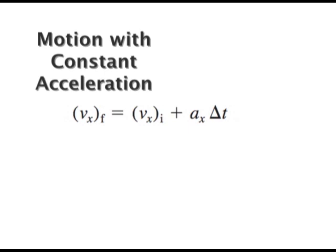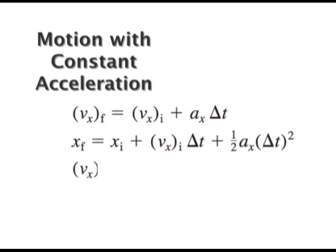I can say the final position is the initial position plus the initial velocity times the time interval plus one-half times the acceleration times the time interval squared. We'll use that one a bunch. Sometimes we get problems where there's no time involved. We'll see some examples of that. Final velocity squared is initial velocity squared plus two times the acceleration times the change in position. That's our equation for that.